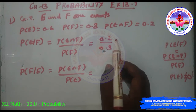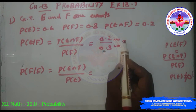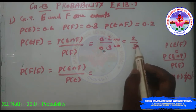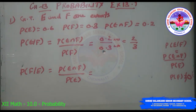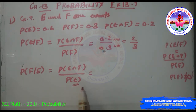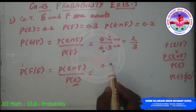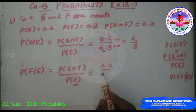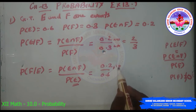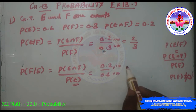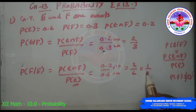Multiplying numerator and denominator by 10: P(E|F) = 2/3. For P(F|E): P(F|E) = P(E∩F)/P(E) = 0.2/0.6. Multiplying numerator and denominator by 10 gives 2/6 = 1/3.